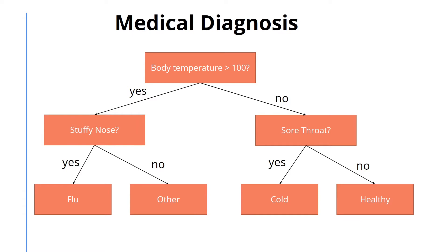We start from the root by asking: what's your body temperature? Based on the answer, we follow up with more questions. Do you have a sore throat? Do you have a stuffy nose? The tree would then classify these symptoms into flu, cold, healthy, or other. This would be a four-way classification problem.